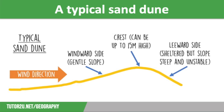But what conditions do sand dunes need to form in the first place? They need the following conditions: a large, wide, flat beach with plenty of sand; a big tidal range so there is enough time for the sand to dry out before the tide comes back in; onshore winds so sediment can be moved to the back of the beach; and obstacles on the beach that can help formation, such as tree roots or driftwood.